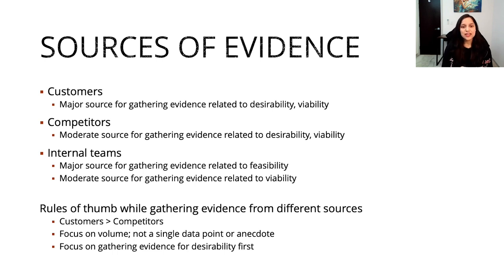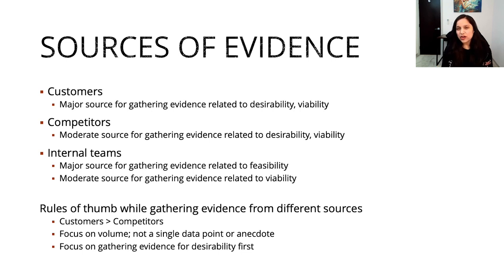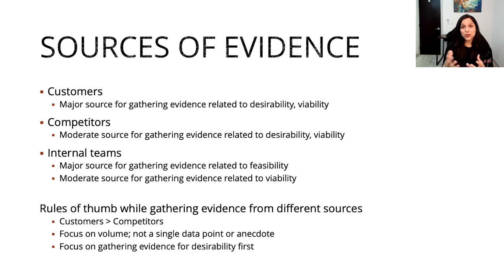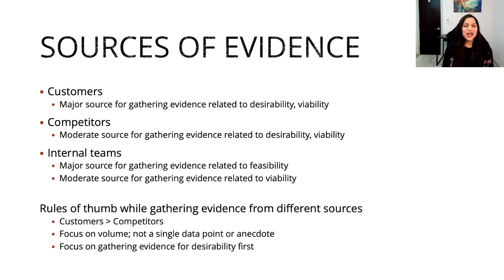Customers are a major source of gathering evidence related to desirability and viability. Will they tell you a lot about whether you as a team can actually build an effective product for them? Maybe not. Your internal teams will have the information you need to determine whether building a particular product is feasible. So if you're working on gathering evidence for feasibility, your internal teams like design, research, engineering, data science, and other teams working on related features are the ones you might want to talk to.